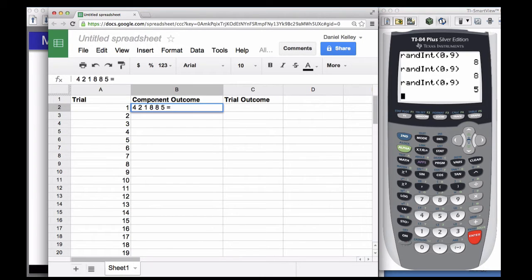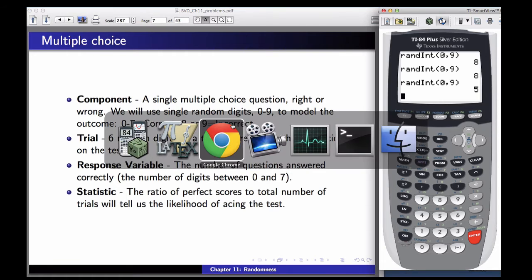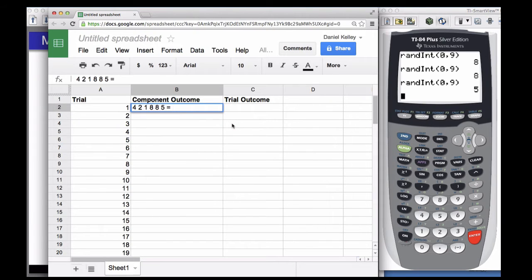Okay, how do we interpret this? What are our component outcomes? I'm going to use C and I to represent correct and incorrect. Now remember we said that 0 through 7 would be correct and 8 or 9 is incorrect. So correct, correct, correct, incorrect, incorrect, correct. Okay, how many of those were correct? There were four.